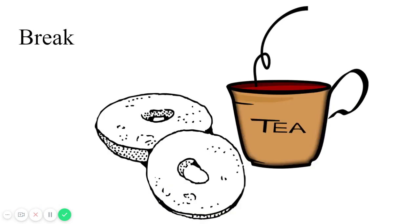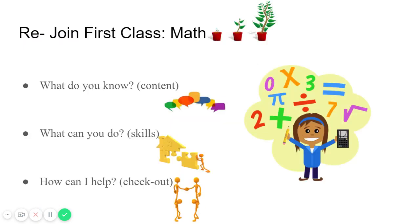Students then go on a break, step away from their computers, grab something to eat, get something to drink, take a little walk around. When they return to class, they're asked the same recurring questions: What do you know about the content that's being addressed? What can you do about the skills that we're covering? And students engage in active learning by demonstrating the content and skills that they're learning. Class ends by the teacher asking, how can I help? This is where students have an opportunity to reflect on what went well, what they struggled with, and what they're hoping to learn in the future.